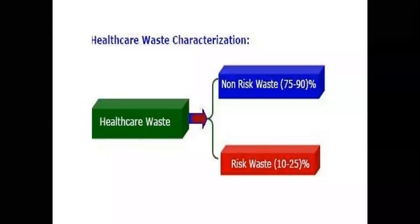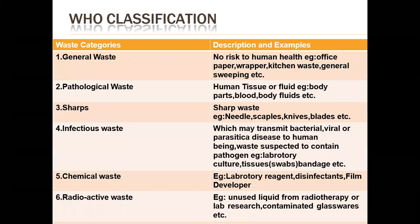We can broadly classify healthcare waste into two types: non-risk and risk. The major chunk is non-risk — about 75 to 90% of waste generated in wards. Risk waste is just 10 to 25%. The unfortunate thing is that we are not able to properly dispose of even this 10 to 15% of the waste. According to WHO classification, this is mentioned in your books and you have to memorize it.